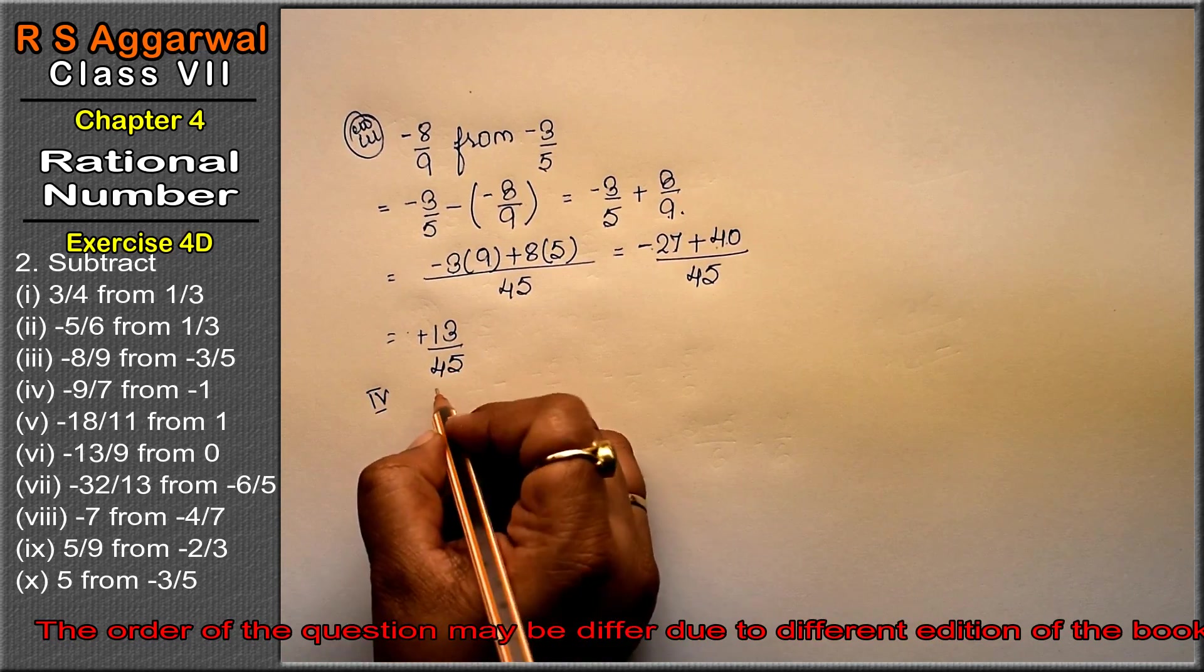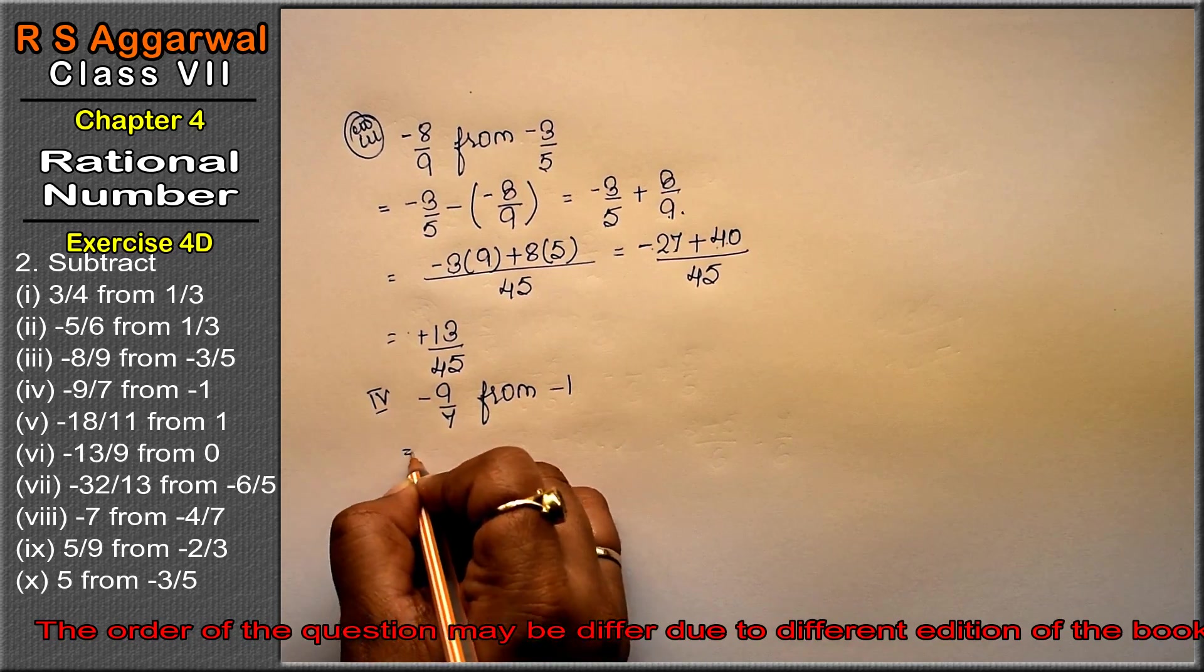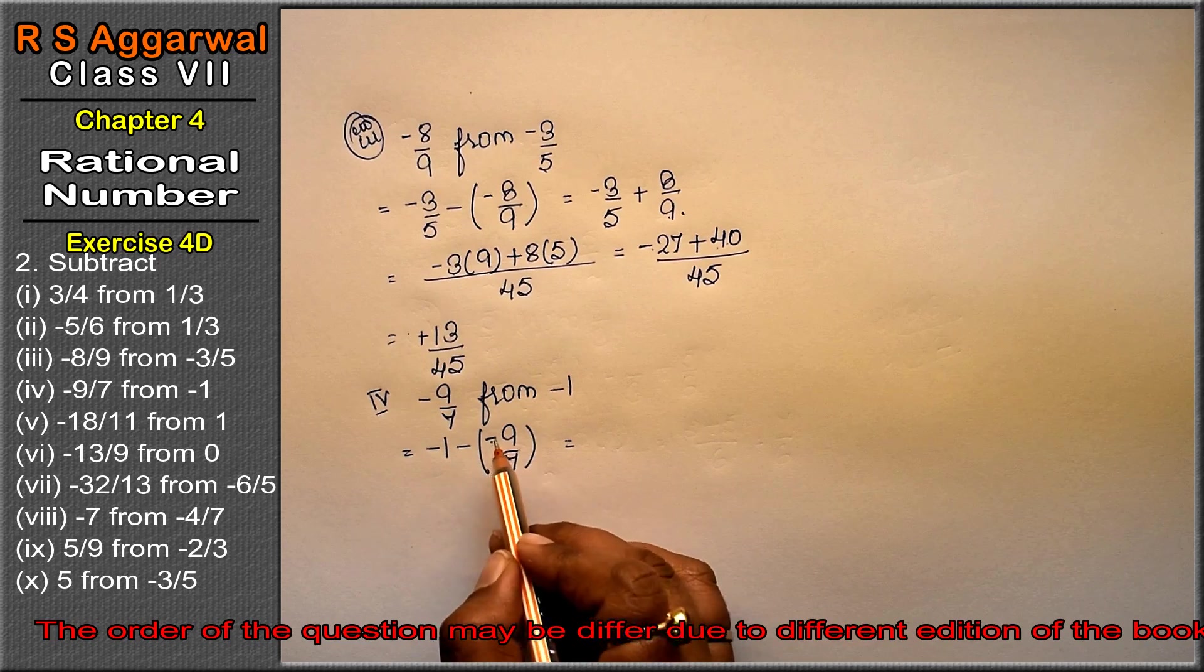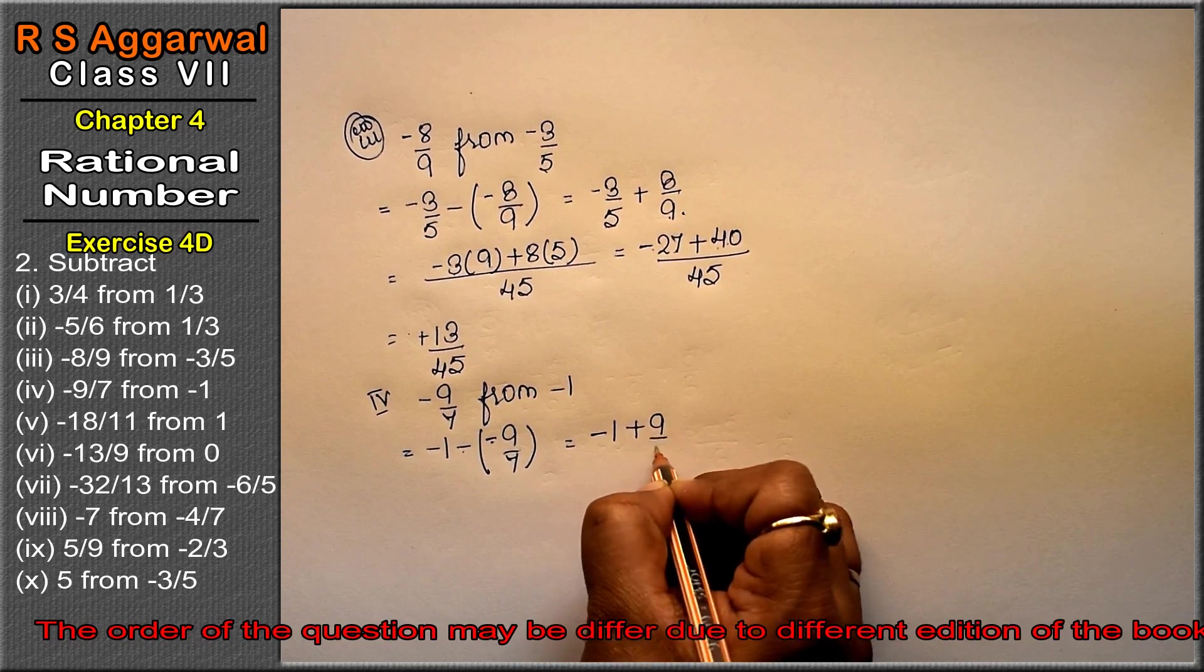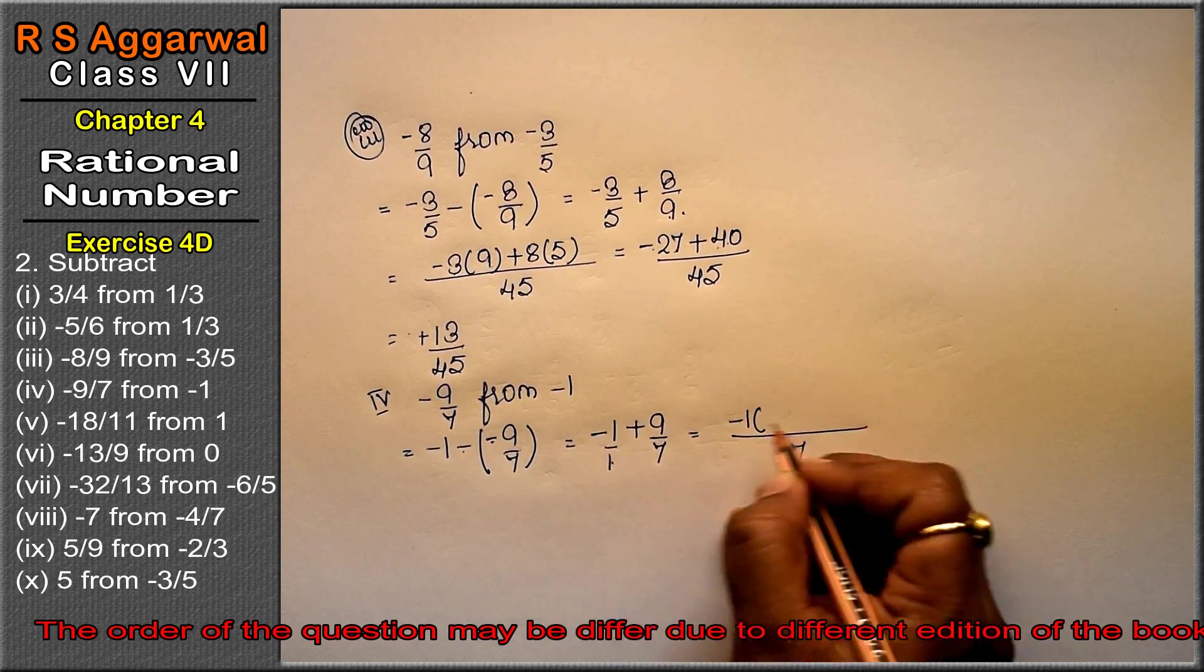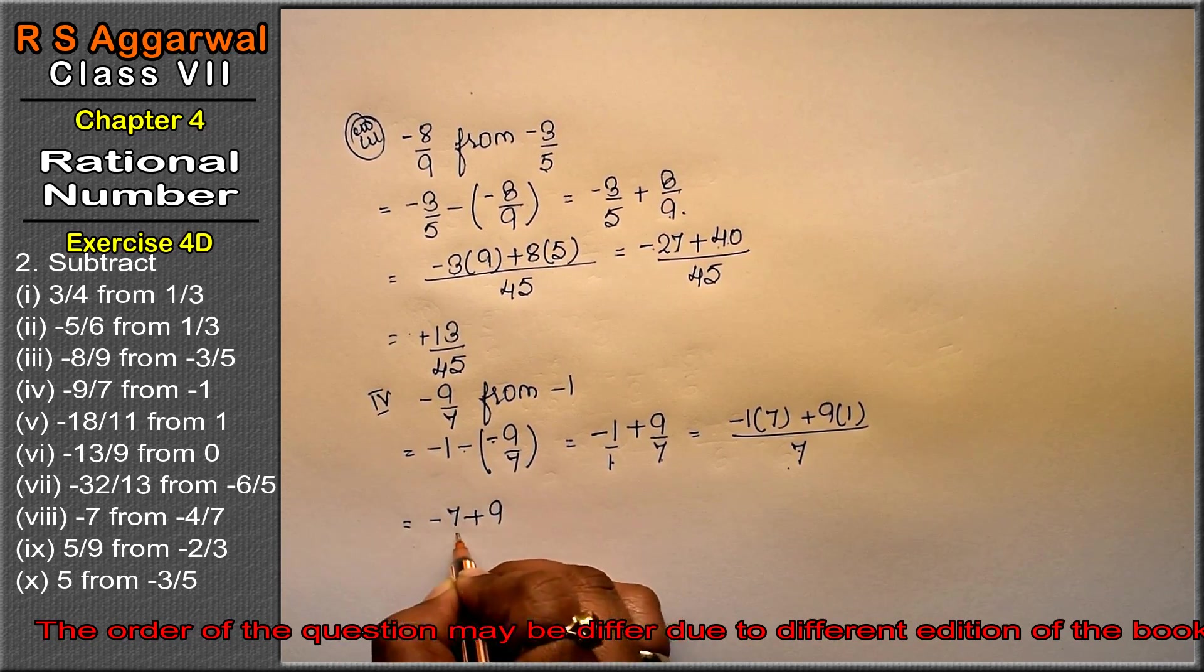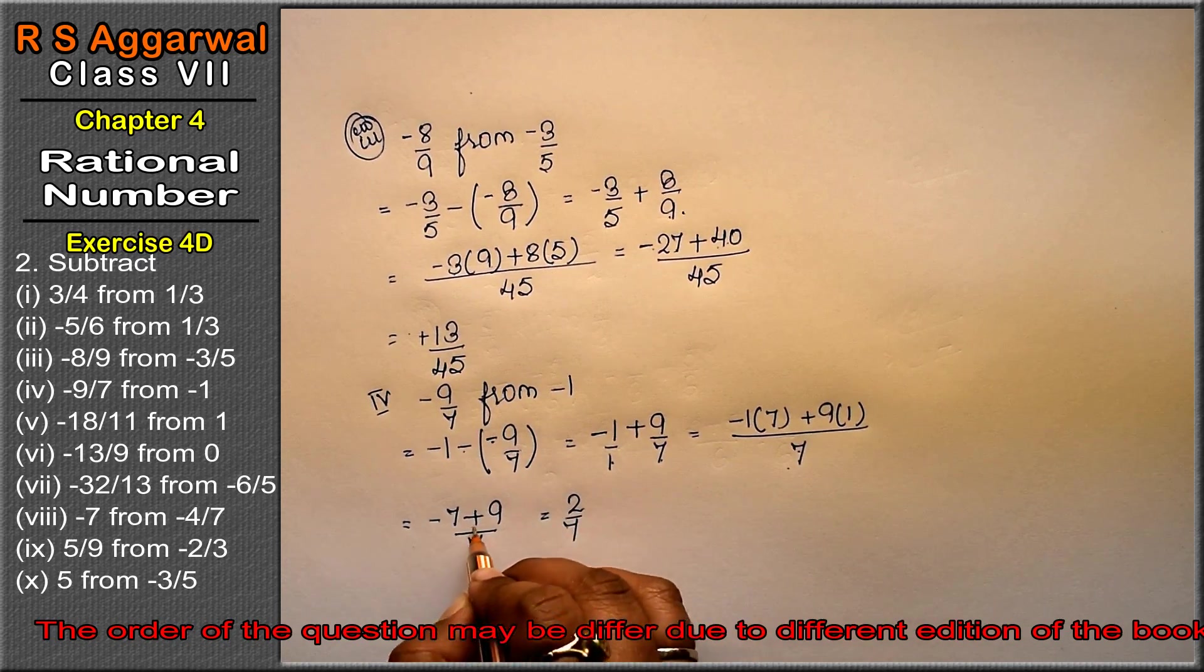Fourth part: subtract minus 9 upon 7 from minus 1. So minus 1 minus minus 9 upon 7. Friends, please write this fully, because sometimes students take this minus but don't write that minus. Minus 1 plus 9 upon 7. LCM is 7. Minus 1 times 7 is minus 7, plus 9. Minus 7 plus 9 upon 7. Opposite signs, subtract: 2 upon 7, sign of the bigger one. This is the answer.